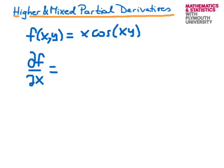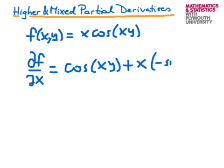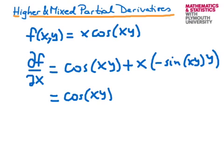When I differentiate the x, I get 1 multiplied by the cosine of xy, so I get cosine of xy, plus x multiplied by the derivative of cosine of xy. For this I have to use the chain rule. The derivative of cosine is minus sine of xy, and I can tidy this up to get cosine of xy minus xy times the sine of xy, bringing the y out to the front.